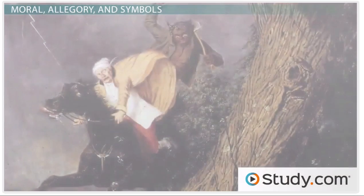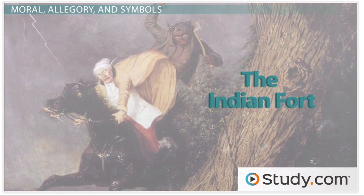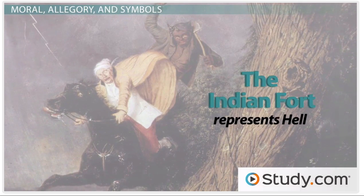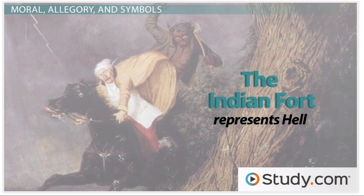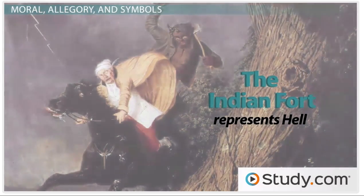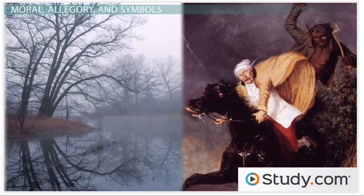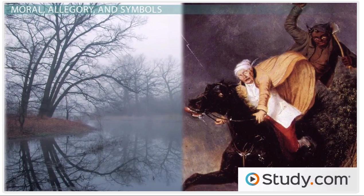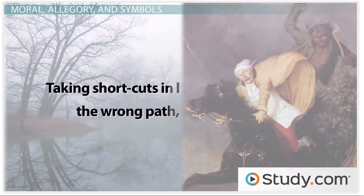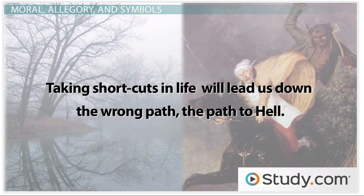The Indian fort then might not surprise you, is a representation of hell. The final scene where Tom is taken on the black horse shows his descent into hell. When we look at the swamp and the Indian fort together, we can conclude that Irving is saying that taking the shortcuts in life will lead us down the wrong path, the path to hell.